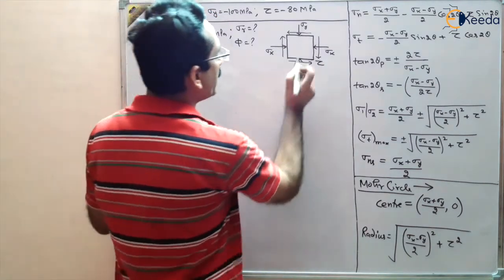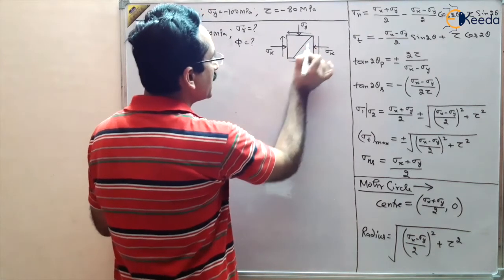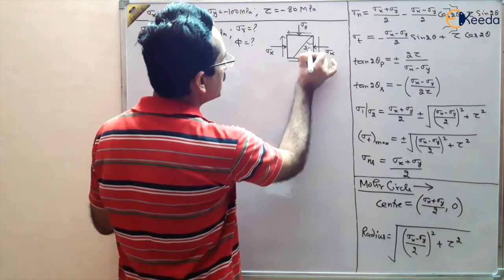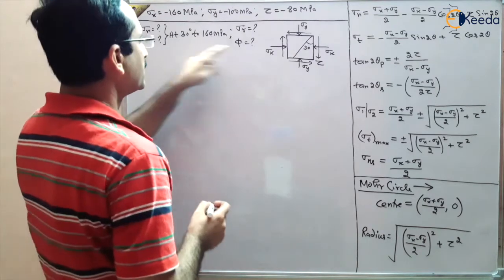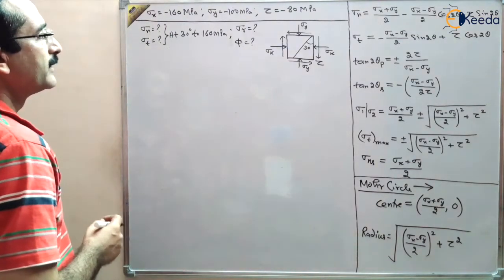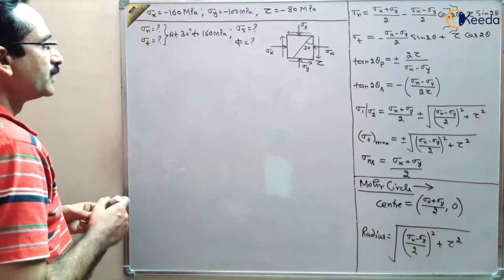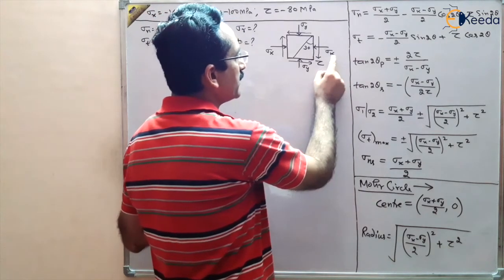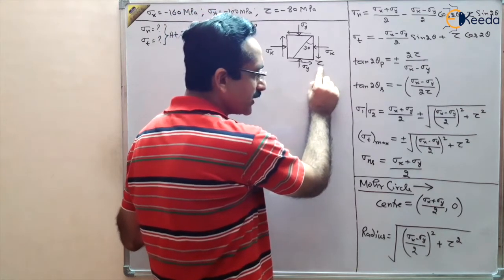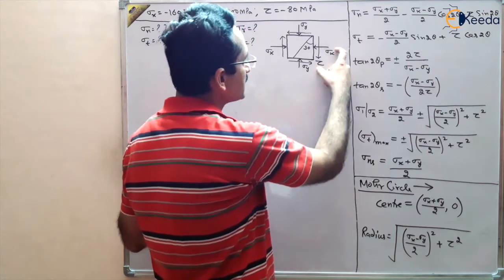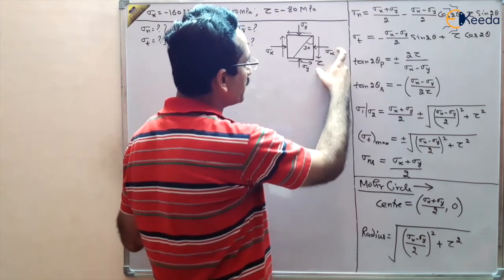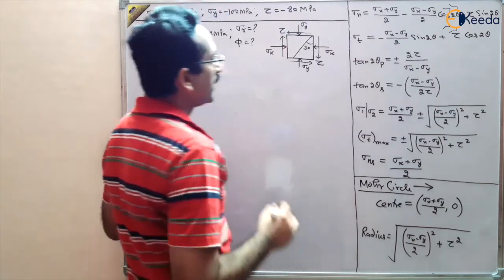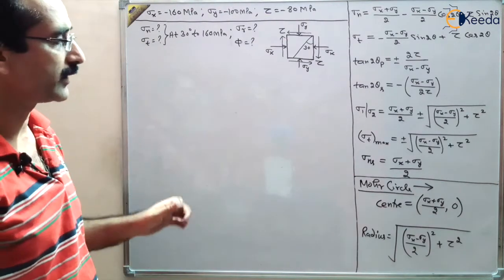We want to find stresses at a certain angle theta, which is 30 degrees to the 160 MPa plane. In the case of Mohr circle, the x-coordinate is sigma and the y-coordinate is tau. One point will be denoted by (sigma_x, tau) and another point by (sigma_y, tau). By locating these points, we will find the other conditions. First, we draw the circle using the center and radius.